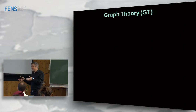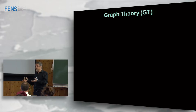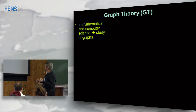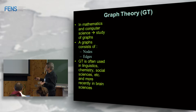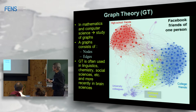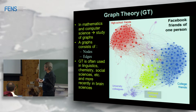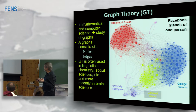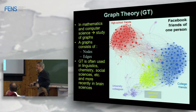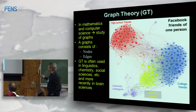Graph theory changed my thinking about networks. In mathematics and computer science, graph theory is the study of graphs consisting of nodes and edges, used in linguistics, chemistry, social science, and more. Here's an example of a network: the Facebook connections of one person, grouped by color — high school friends, college friends, girlfriend's friends in yellow, and university colleagues. Just by looking at it you can infer the girlfriend is probably in academia too, given her connections to university colleagues.